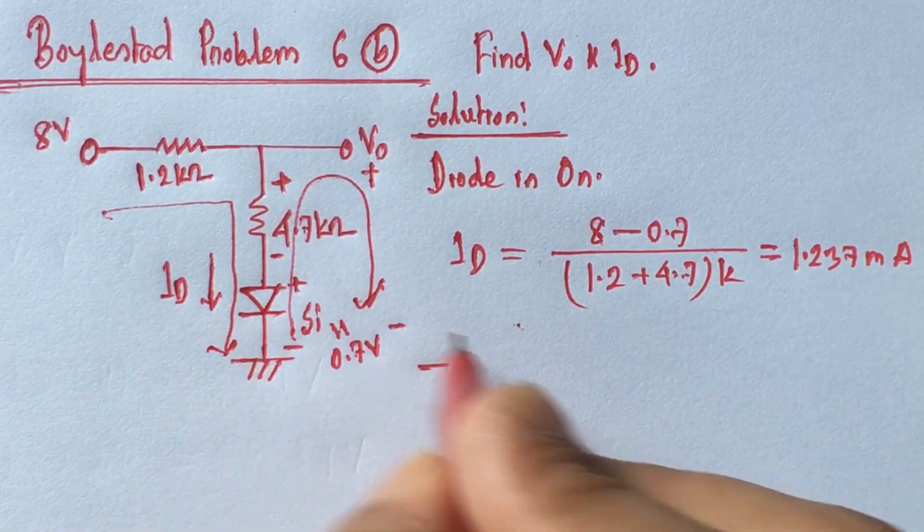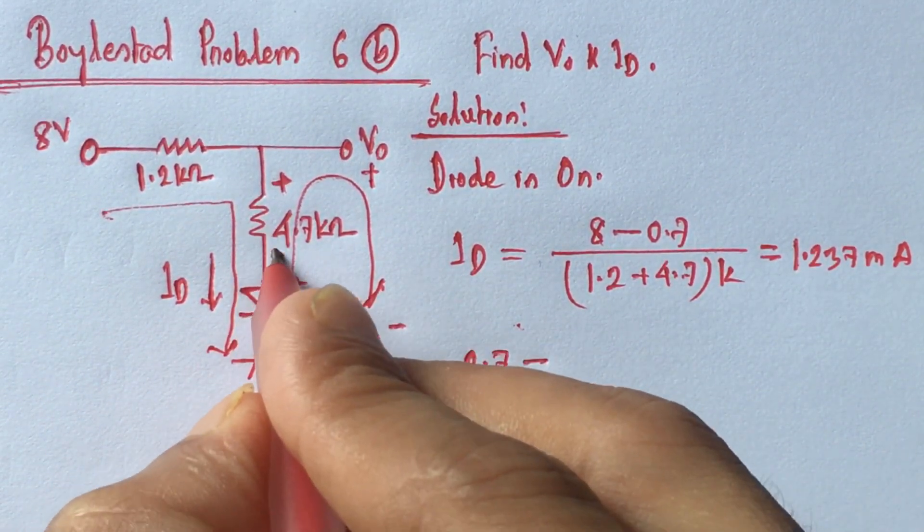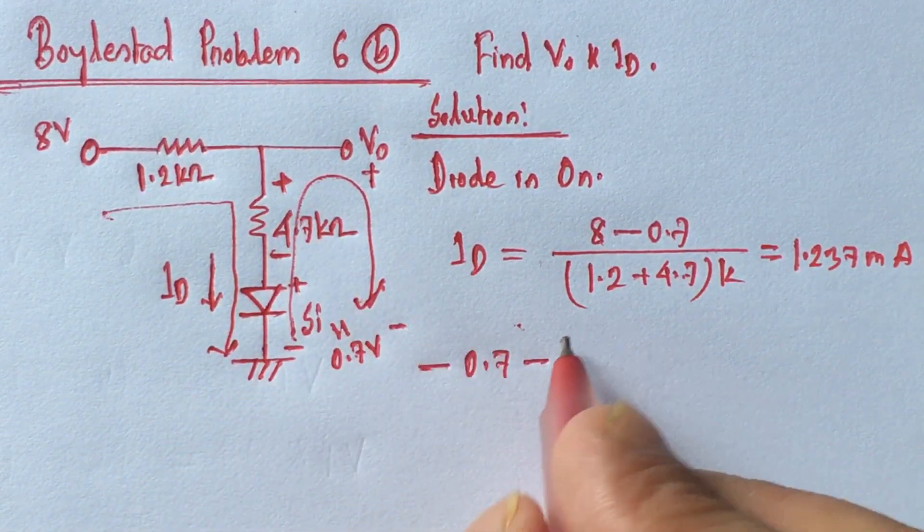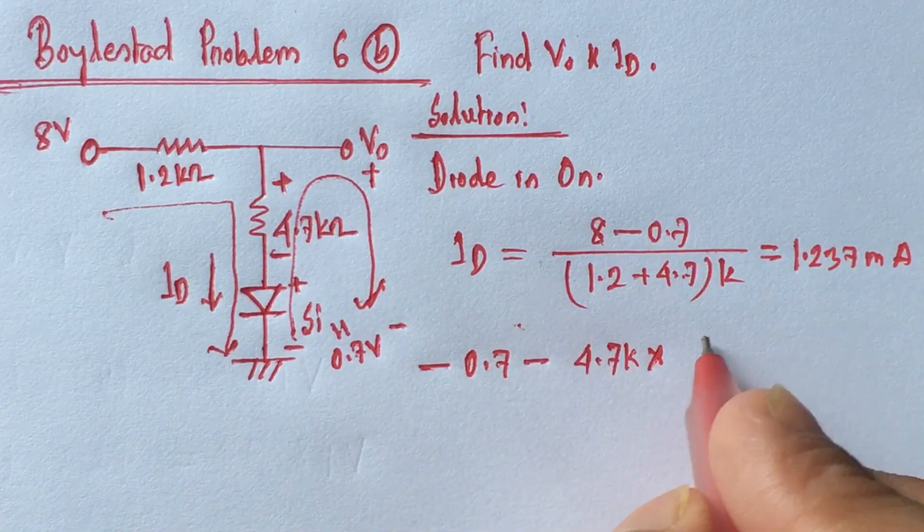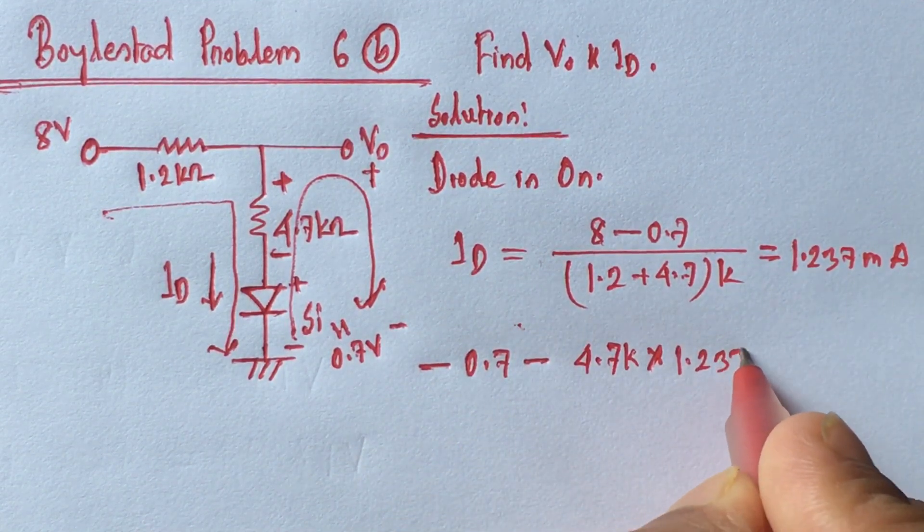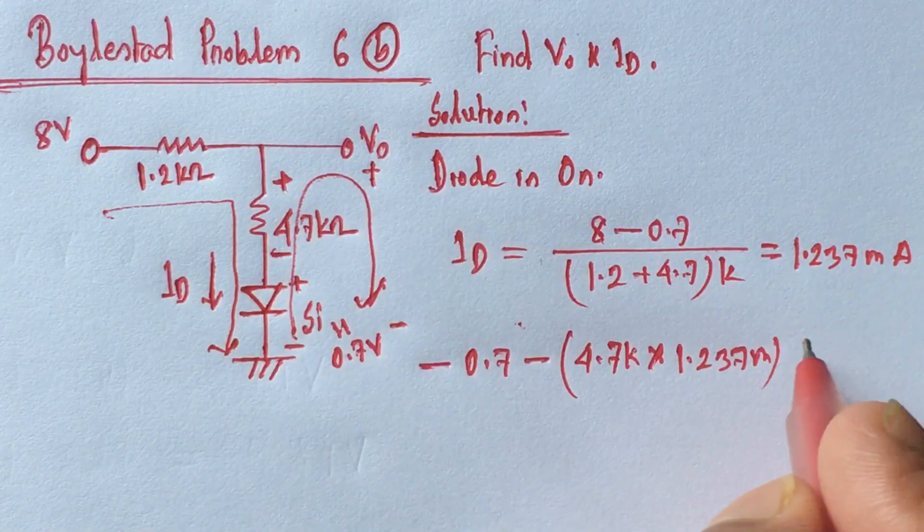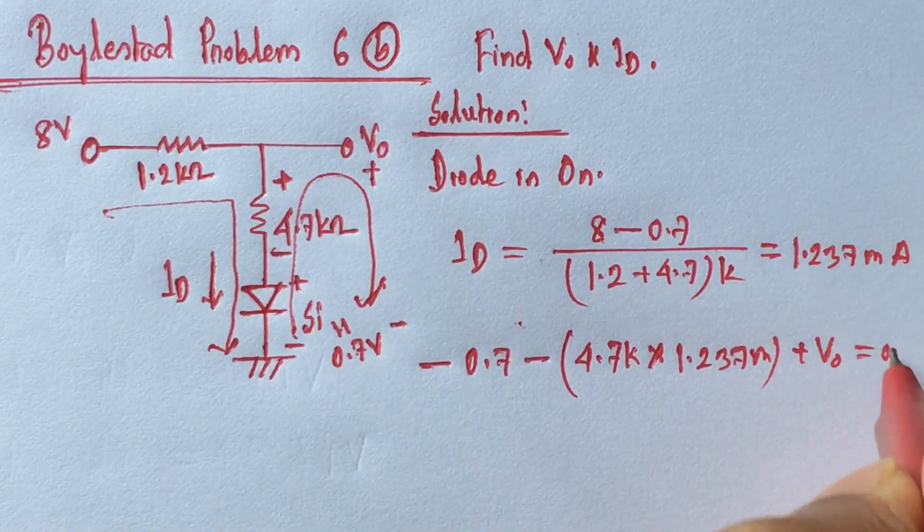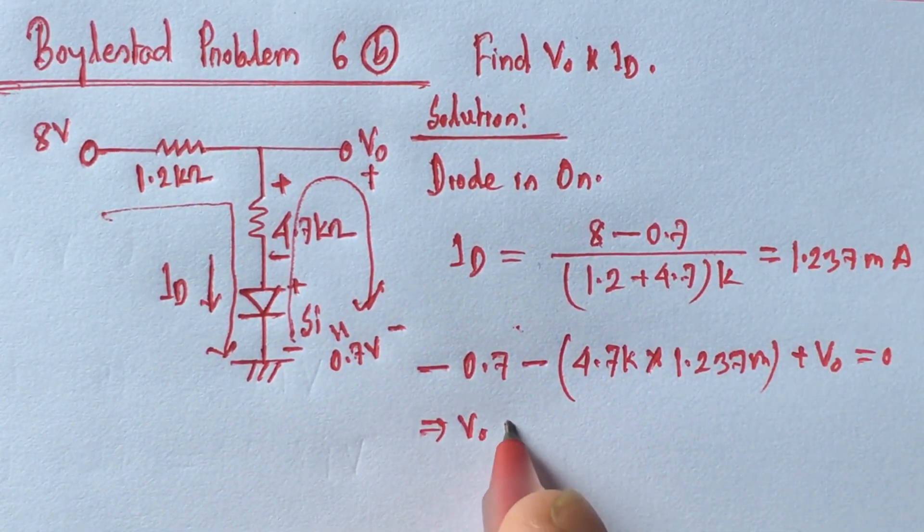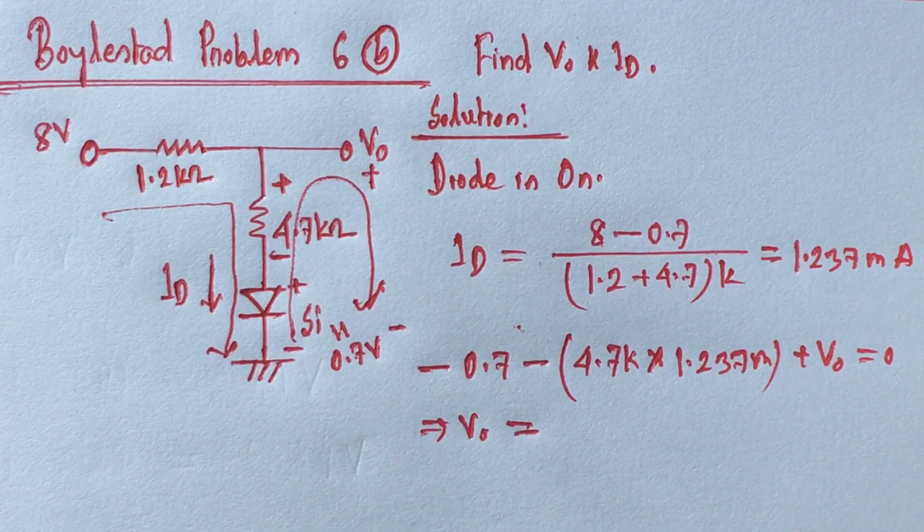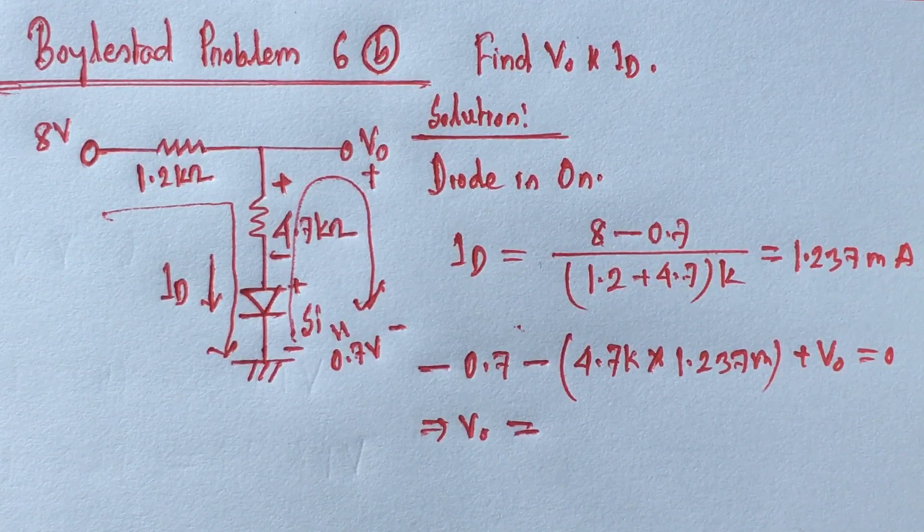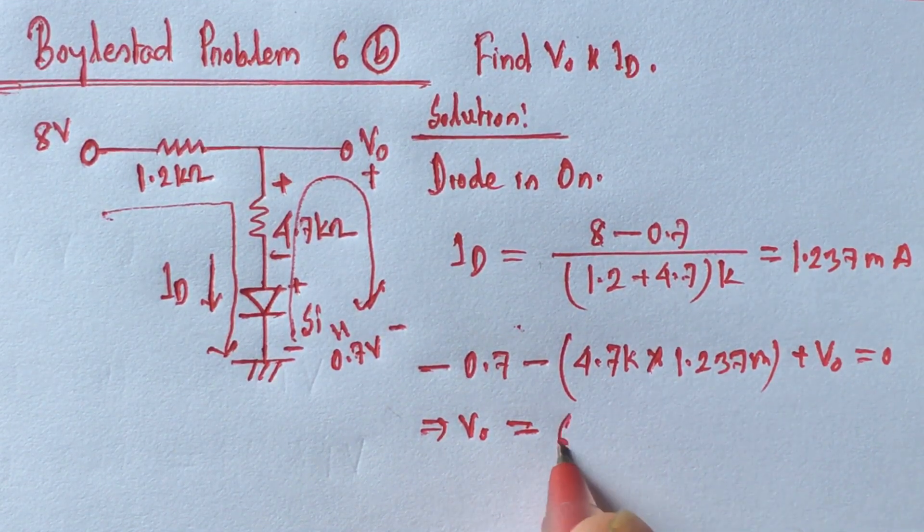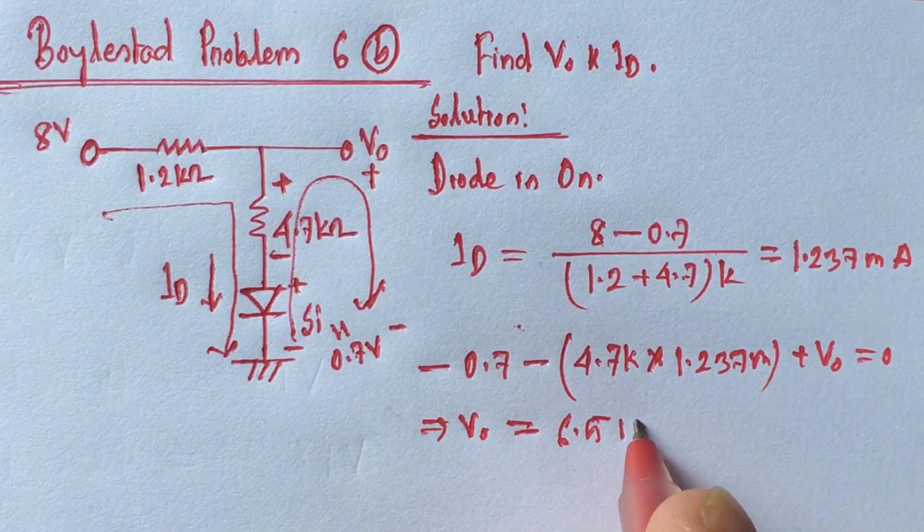Minus 0.7, minus this voltage, 4.7k times the value of ID, 1.237 milliamperes, plus V0 equals zero. Solving this, V0 equals 6.51 volts.